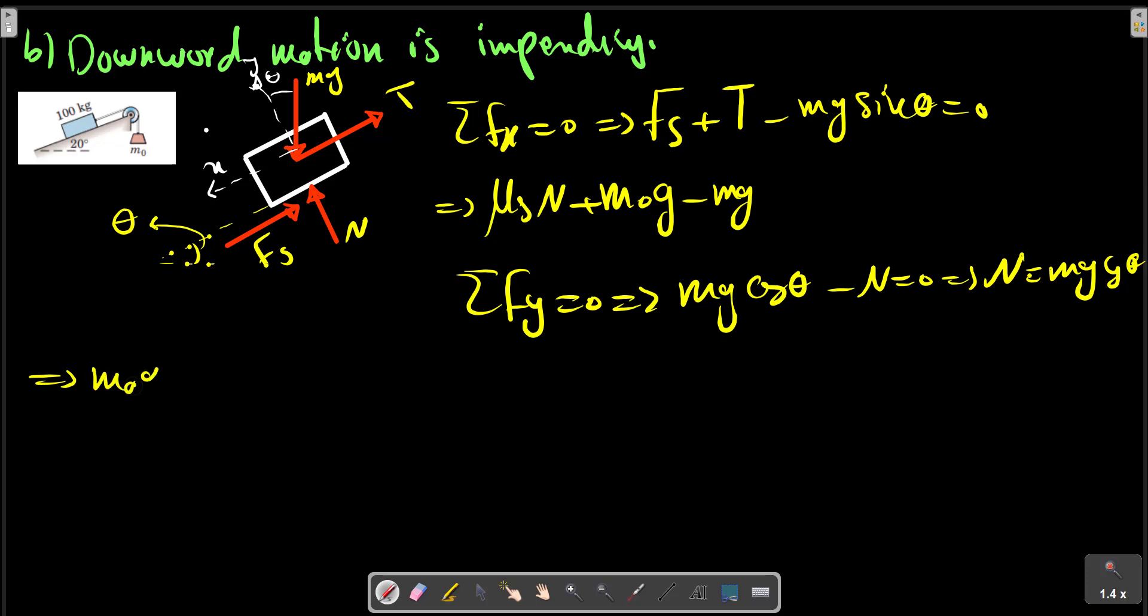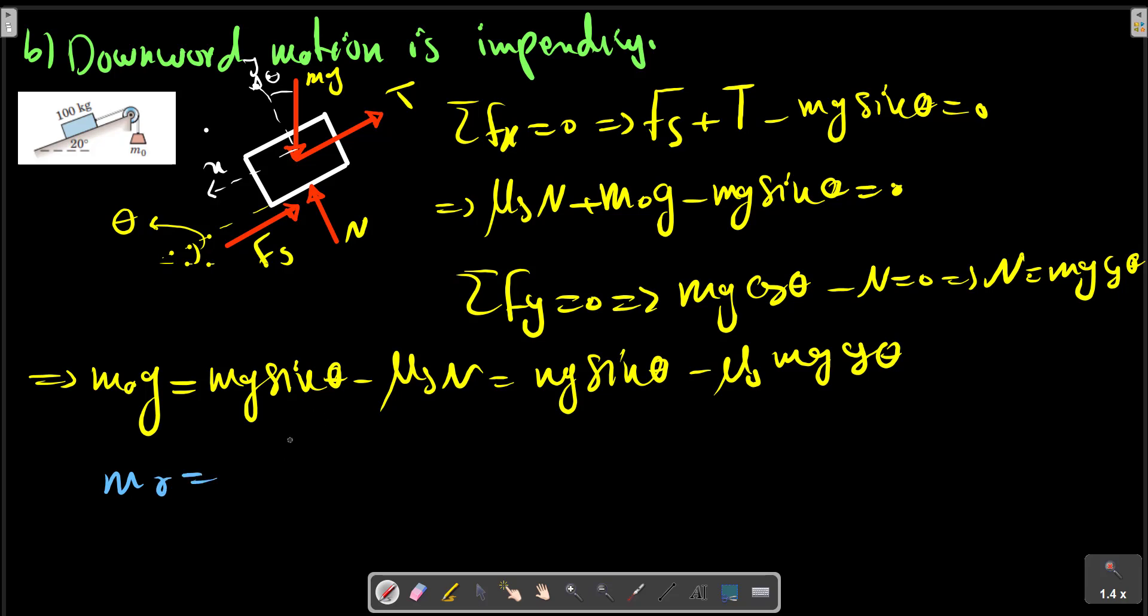m0*g equals mg sin theta minus mu_s*N, which is mg sin theta minus mu_s*mg cos theta. Therefore, m0 equals m times (sin theta minus mu_s cos theta), with m equals 100 kg, mu_s equals 0.3, and theta equals 20 degrees.